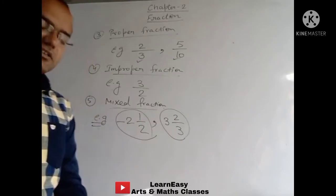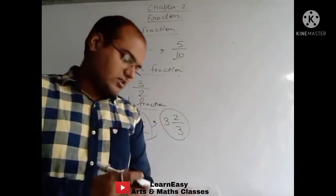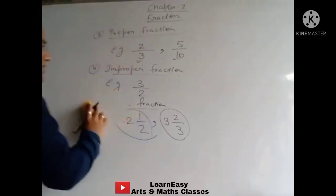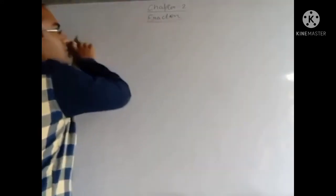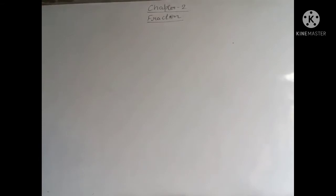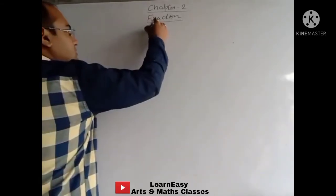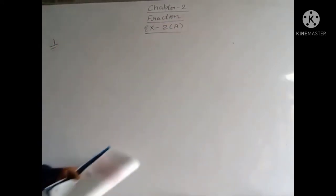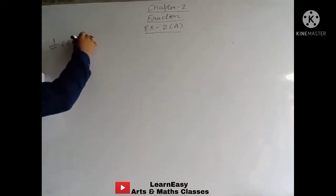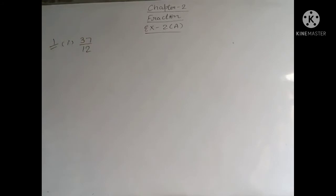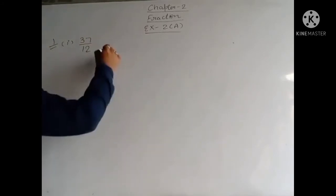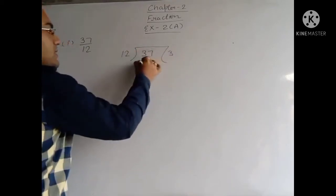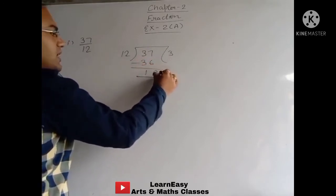Now we will start solving the questions of exercise 2A. The first question is: Express the following as Mixed Fractions. First part: 37 upon 12. In order to convert to a Mixed Fraction, we have to divide 37 by 12. 12 times 3 is 36. On subtracting, we get remainder 1.